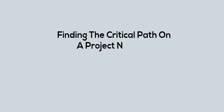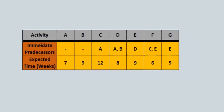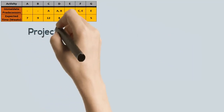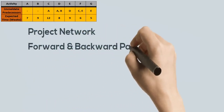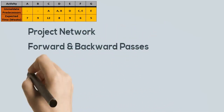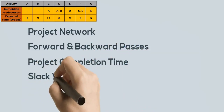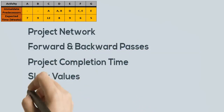Finding the critical path on a project network. For an example, I will be working with this activity schedule. I will be constructing a project network, doing forward and backward passes, determining the project completion time, calculating slack values, and finally stating the critical path.